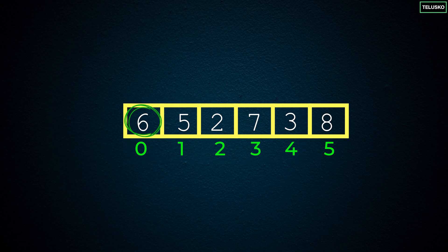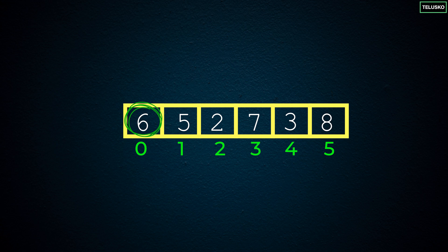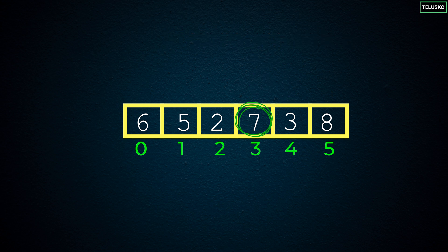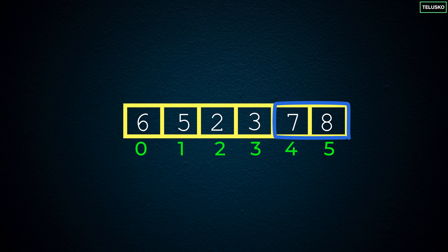We repeat the steps. Again starting with six, assuming it's the biggest. Compare six with five — still biggest. Compare with two — no change. Then seven comes along and says it's bigger than six, so the current biggest becomes seven. Compare seven with three — seven is still biggest. So after this second iteration we move seven to where three was. Now we have two sorted values, seven and eight, at the end, and the first four values are still unsorted.